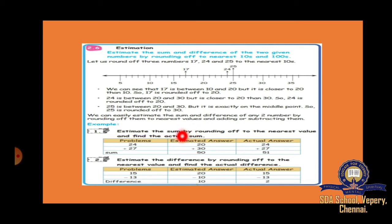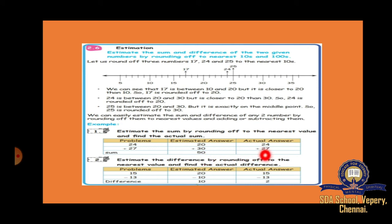Next, estimation. You have to find the sum or difference of the given numbers by rounding off to the nearest tens and hundreds. For example, 24 rounds to 20, and 27 rounds to 30. You write both the estimated answer and the actual answer. The same applies to subtraction estimation.